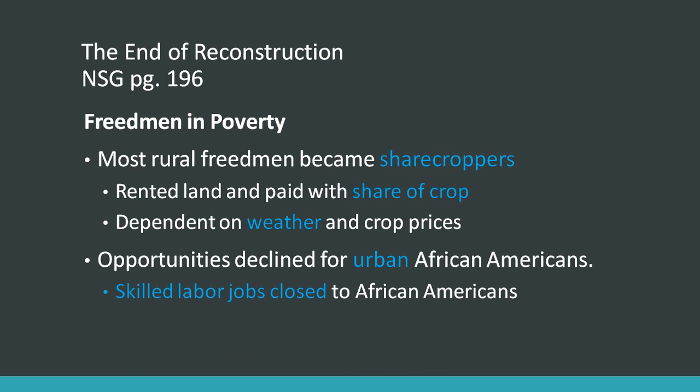If you look at pages 434 and 435, there's an exploration of the sharecropping cycle and the cycle of debt and poverty that existed within the sharecropping community. Go ahead and read those. You can also go online and use the history interactive to see how freed African-Americans were kept in basically poverty and tied to the land.